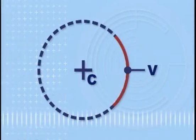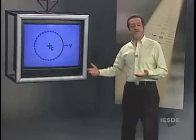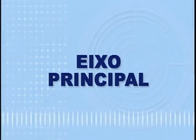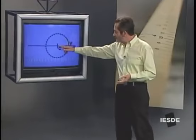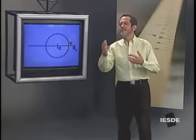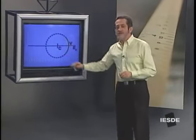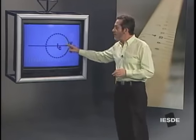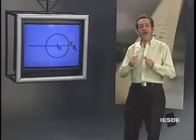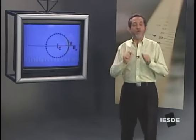O próximo elemento é o vértice do espelho. Quem é o vértice do espelho? É o ponto médio da calota que representa esse espelho. O nosso próximo elemento é o eixo principal. Quem é o eixo principal? É a reta que passa pelo ponto C e pelo ponto V, isto é, passa pelo centro de curvatura e pelo vértice. Existe uma reta única e apenas uma que passa por dois pontos distintos. Então, o eixo principal é único, não existe outro no espelho.